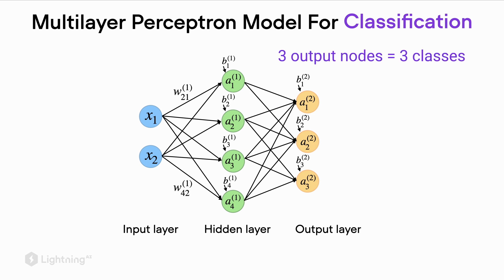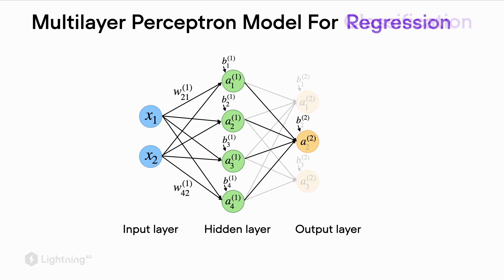And here for reference now is a multilayer perceptron for regression. Again we have the two input features, the hidden layer consisting of four units, but now we only have one output node. That's because we don't predict class labels anymore, we are now only returning a continuous value.